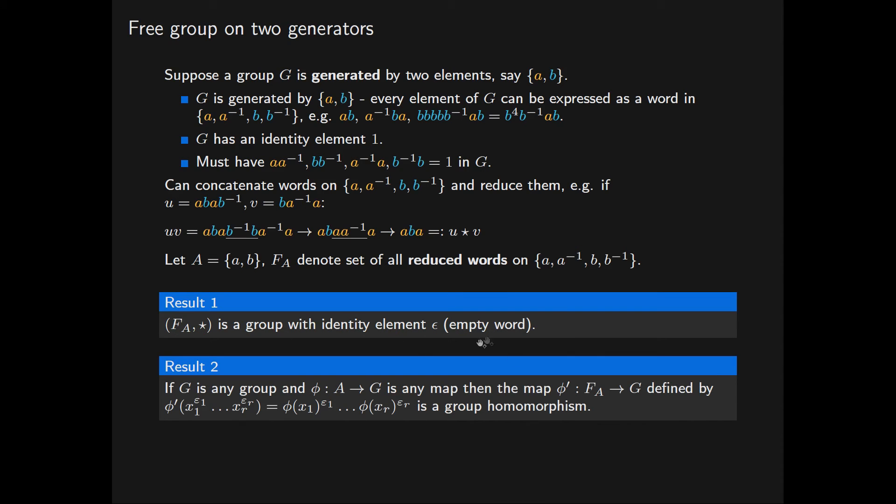From this it follows that if G is any group and phi any map from this set A into G, then the map phi prime from F(A) into G defined as follows gives us a group homomorphism, where each of these x_i's is in the set A and each of the epsilon_i's is in the set plus minus one.